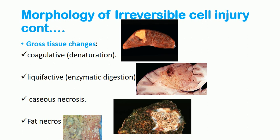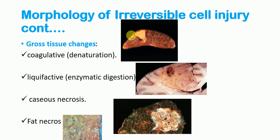For gross tissue changes, irreversible cell injury is manifested as coagulative necrosis. Coagulative necrosis is most common in solid organs, for example the kidney. As shown here, after denaturation the kidney has undergone coagulative necrosis — the normal architecture of the organ is still preserved but there is denaturation in the affected area. The area of coagulative necrosis is visible here, while the normal architecture remains preserved.